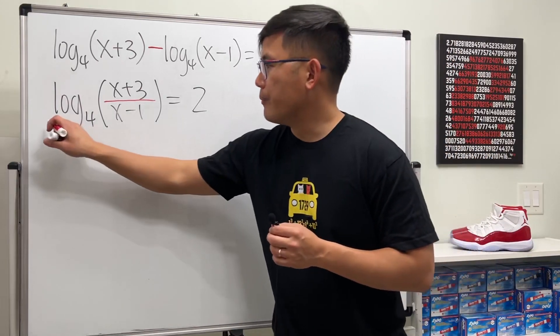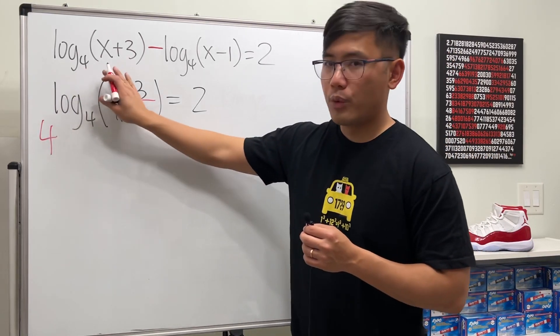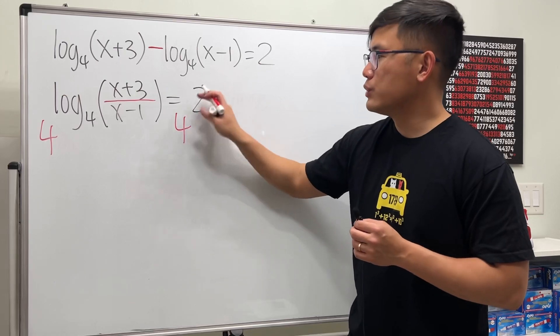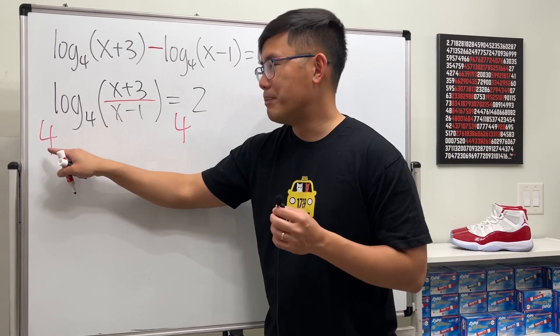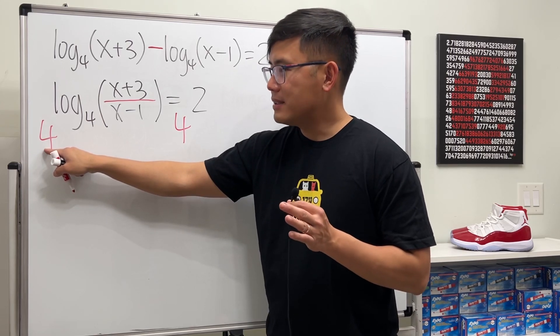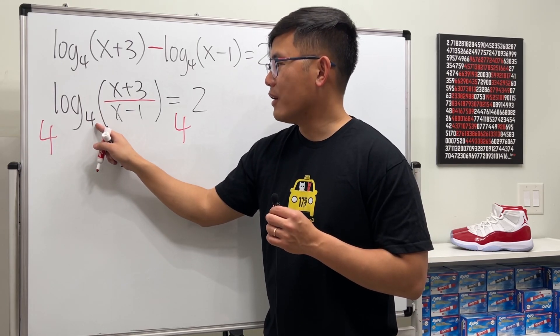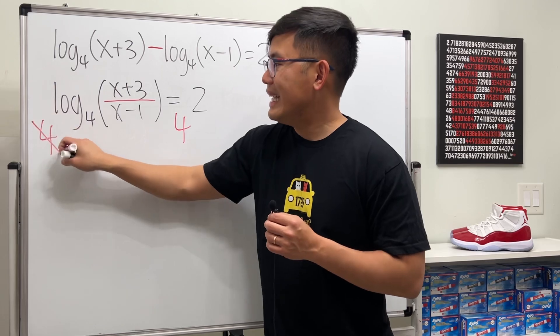We will do 4 to this power, and then 4 to this power. When the base of the exponent and the base of the log match, they cancel.